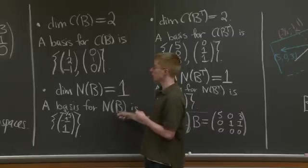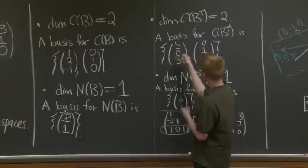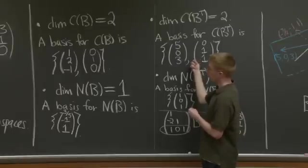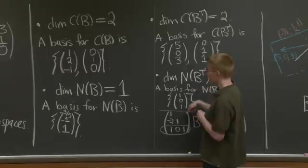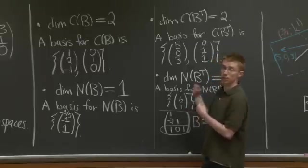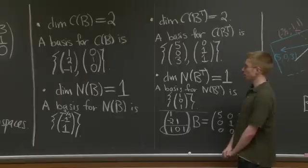For the null space, we looked at the U matrix. For the row space, we also looked at the U matrix. And for the left null space, we needed to invert the L matrix and look at the free row. OK, now, the last thing, I mean, we're done with the problem, but the last thing that's useful is to draw a picture.